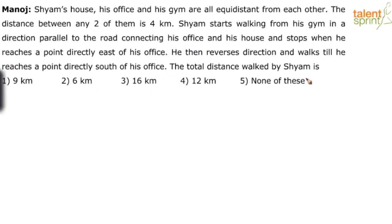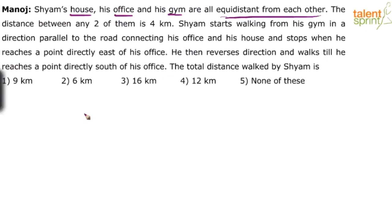Let's try and understand the first statement. It says Shyam's house, his office and his gym are all equidistant from each other. When is it possible that three points are equidistant from each other? There are three points and all three are equidistant, meaning the distance between any two points is constant. That can happen only when we make an equilateral triangle.